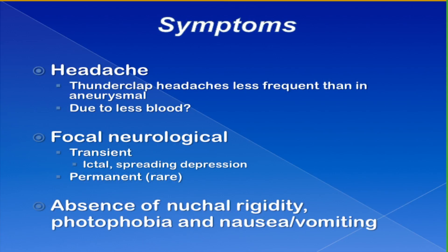Anytime you're dealing with subarachnoid bleeding, headache is a frequent symptom. They are typically not the bad thunderclap type described as the worst headache of someone's life — probably because there's less blood, giving less nuchal rigidity, less photophobia, and less nausea and vomiting, since you don't get as much intracranial pressure rise. Focal neurological symptoms are also common — heaviness or numbness over half the body — often transient, spreading over several minutes, then resolving and recurring, though more rarely they may be persistent.